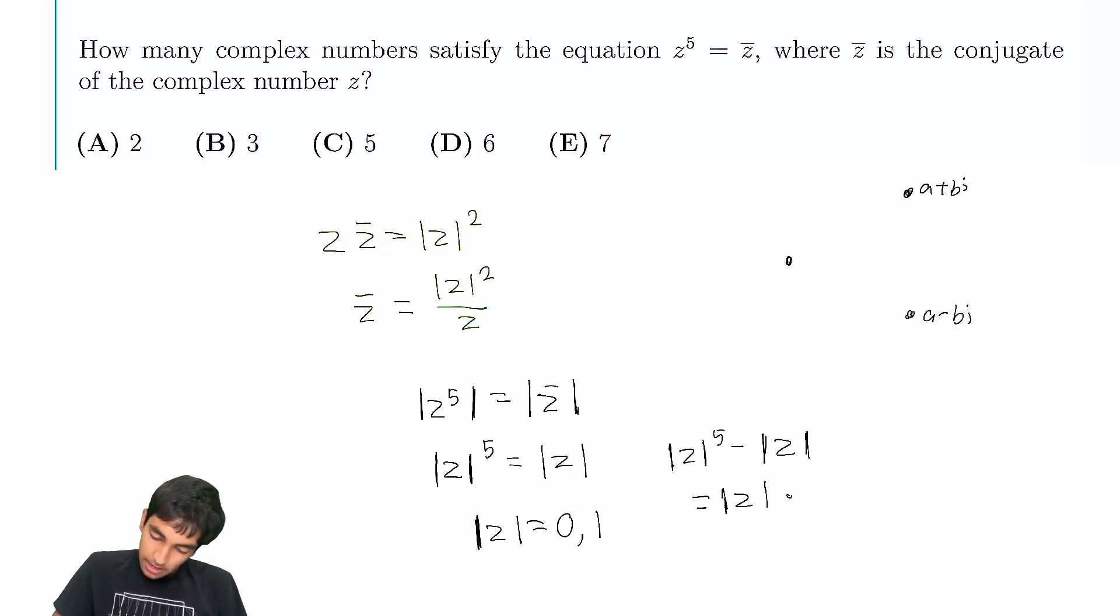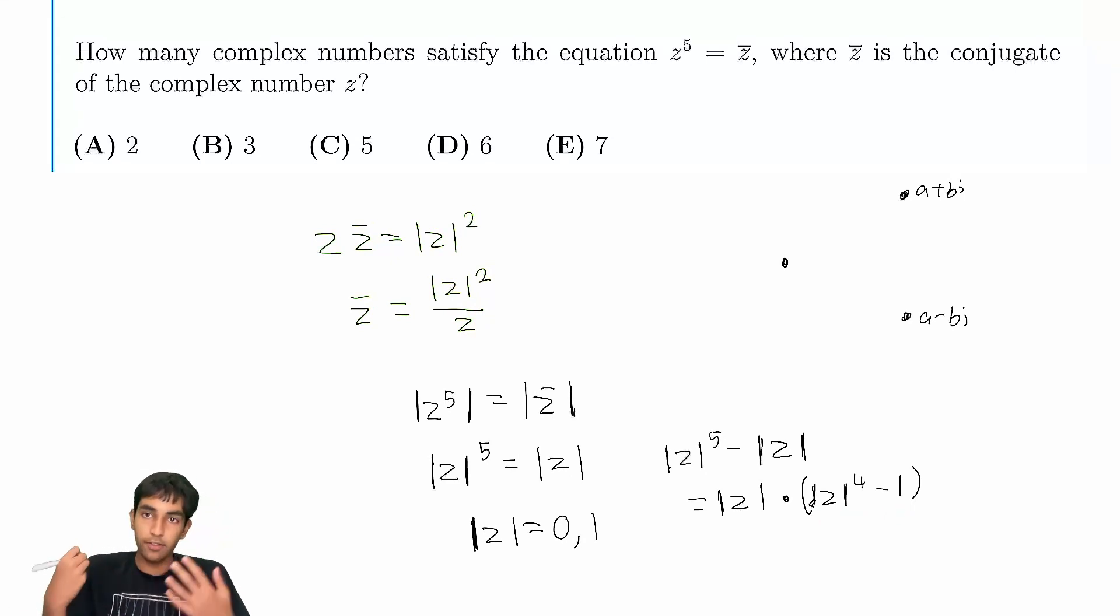So, we either have magnitude of z to the 4th is 1, which means magnitude of z is 1, right? Magnitude has to be positive, real. Or this is 0, just right off the bat.